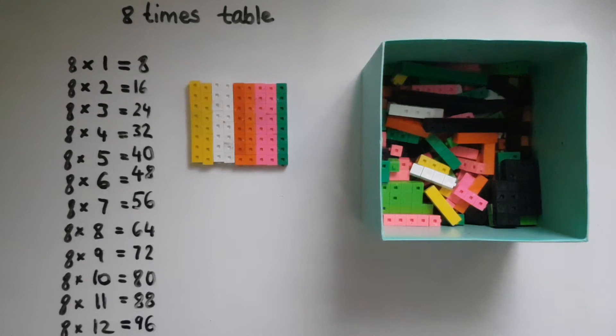But you could use other strategies for this. So you could break down the 12 into 10 and 2. So 10 times 8 is 80, and 2 times 8 is 16. Adding them together gives us 96. Same thing with the 11. You could break it down into 10 and 1. So 80 and 8 gives us 88.